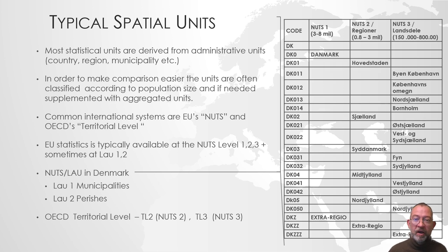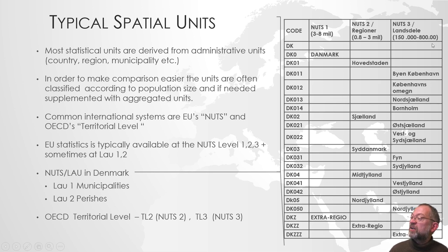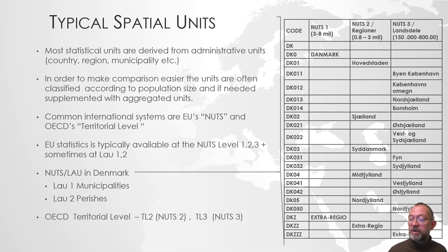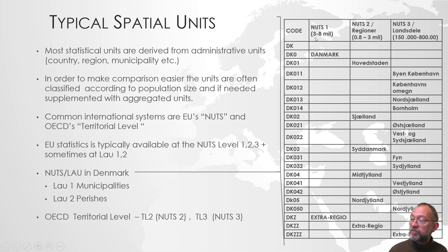If you are in Germany, NUTS level 1 would be the Länder. Then we have NUTS 2, which is between 0.8 and 3 million inhabitants — in Denmark that corresponds to our regions. And then NUTS level 3, which is between 150,000 and 800,000 inhabitants, and that's the municipalities. So NUTS tries to make municipalities comparable between Denmark, France, and Germany, where we have quite different sizes, by grouping them into these levels.